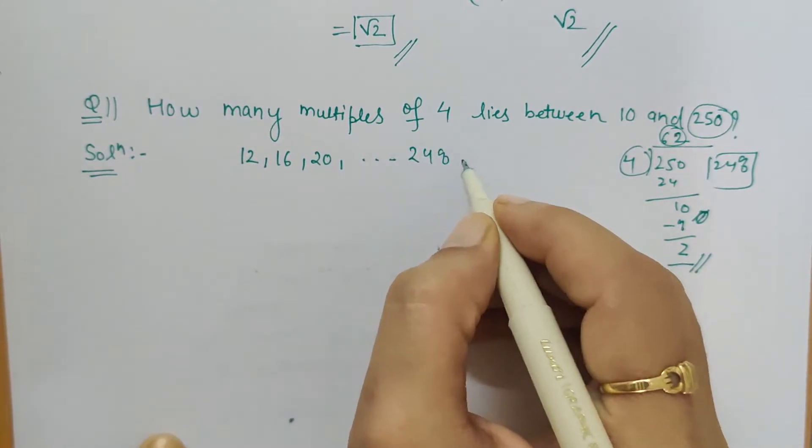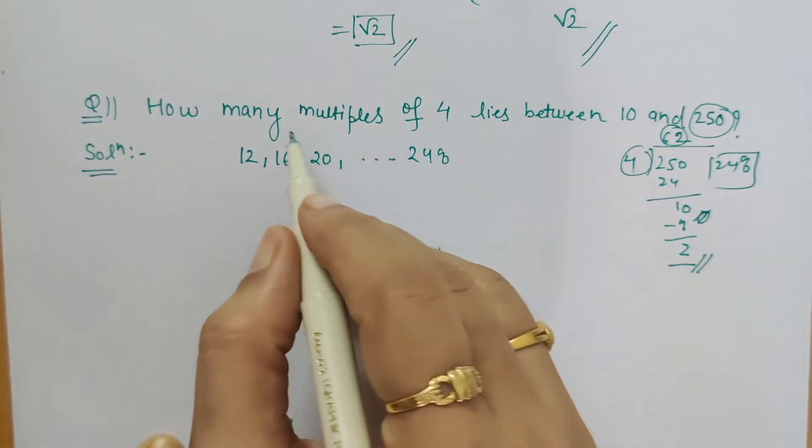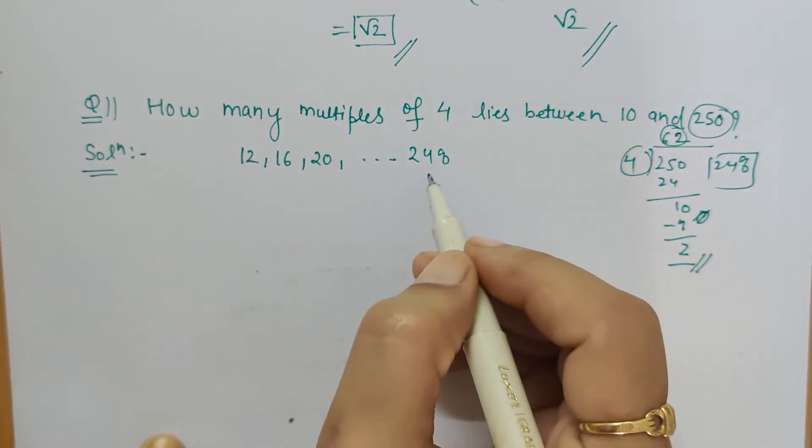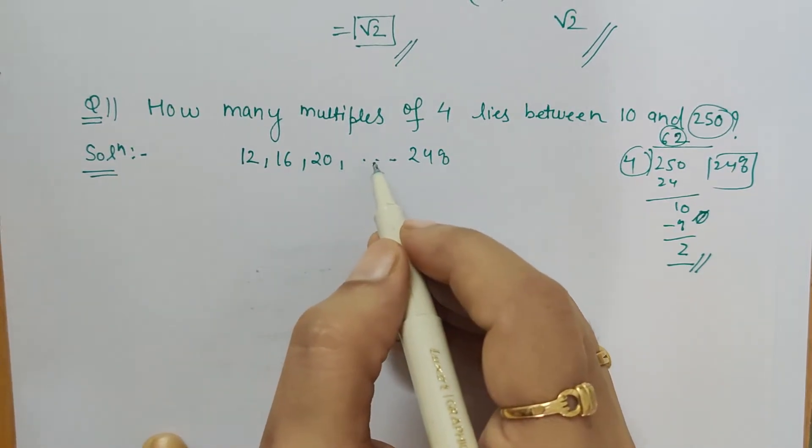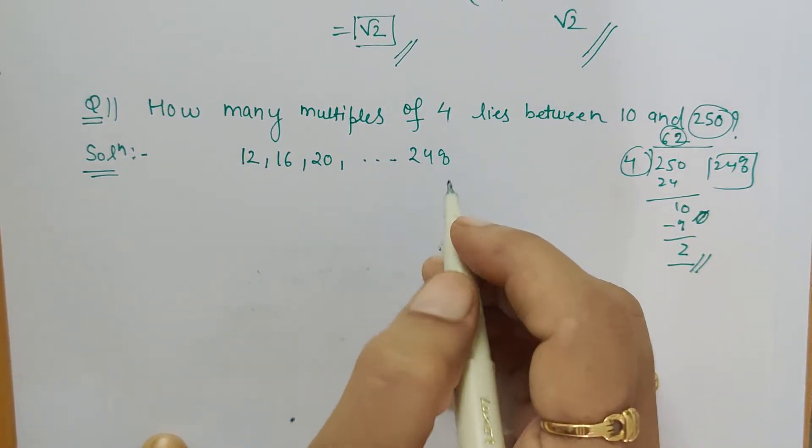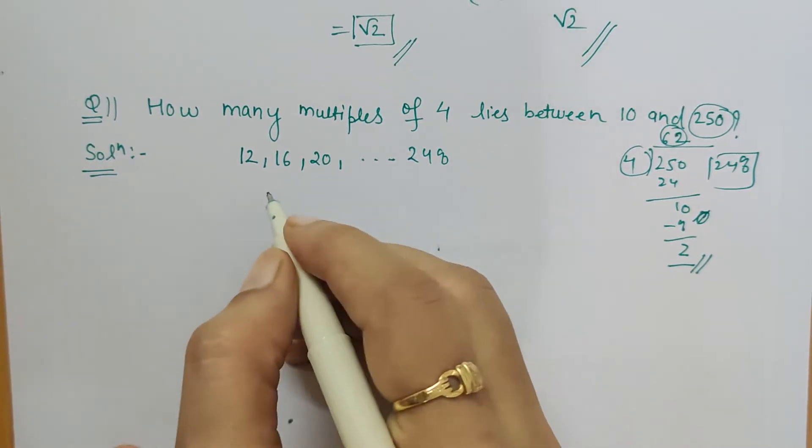248 is the last number which is divisible by 4. Now we have to find how many such numbers are there. Will it be feasible if we start counting 12, 16, 20, 24, and so on? No, not at all, because that will be a tedious process.